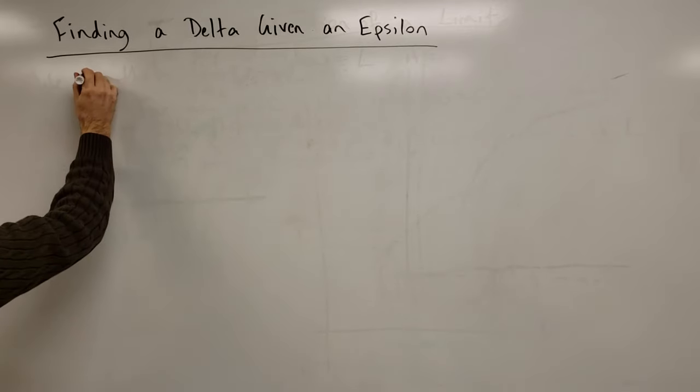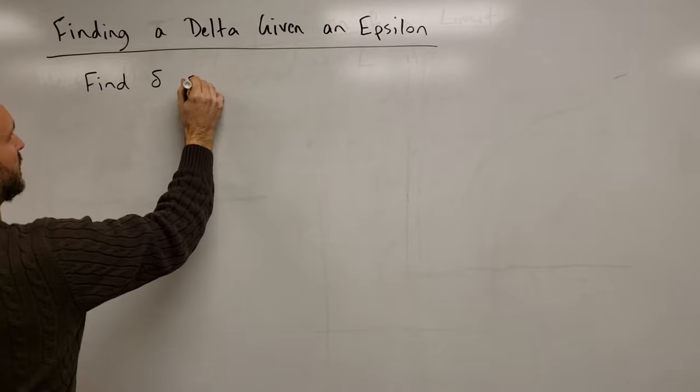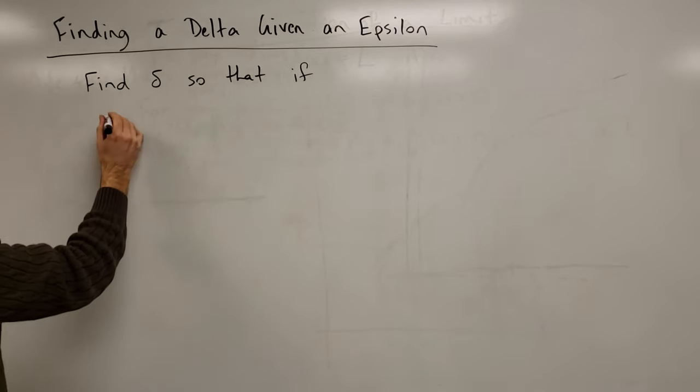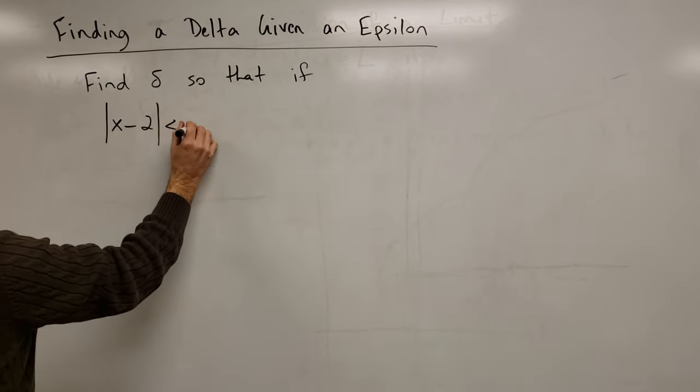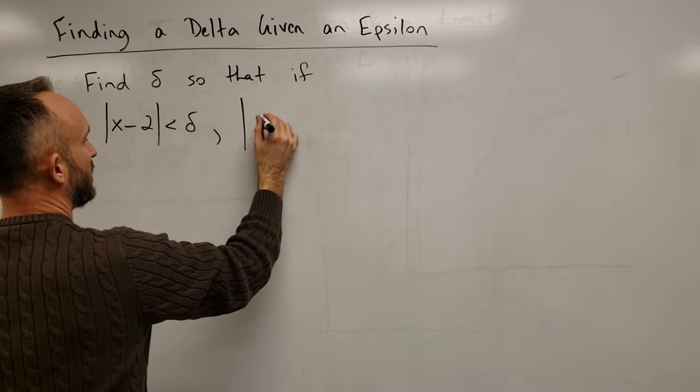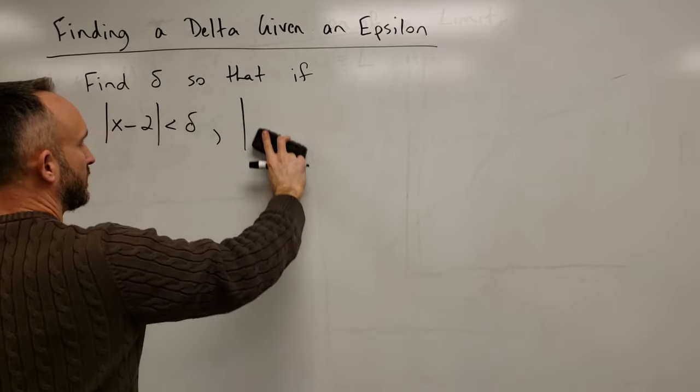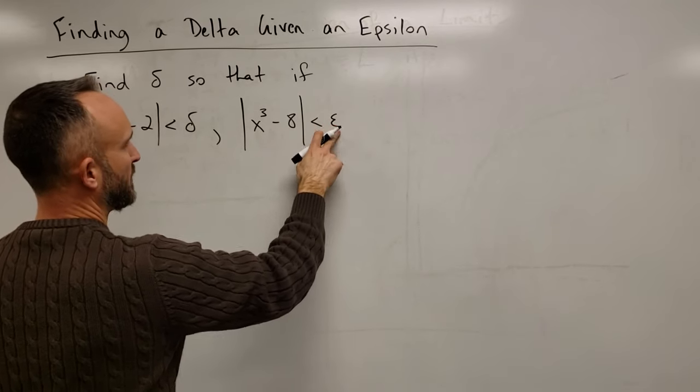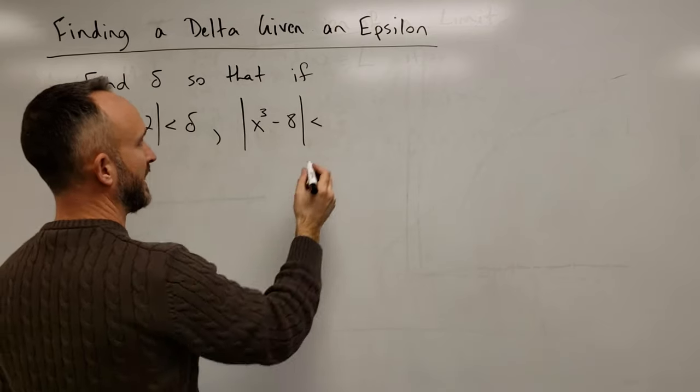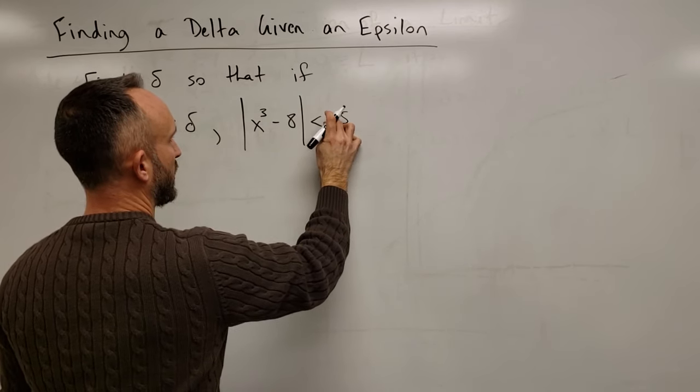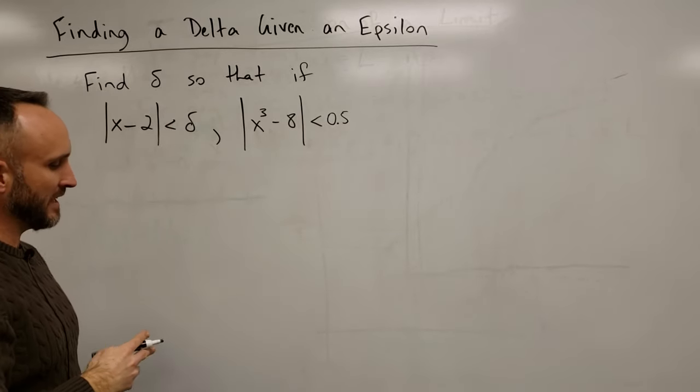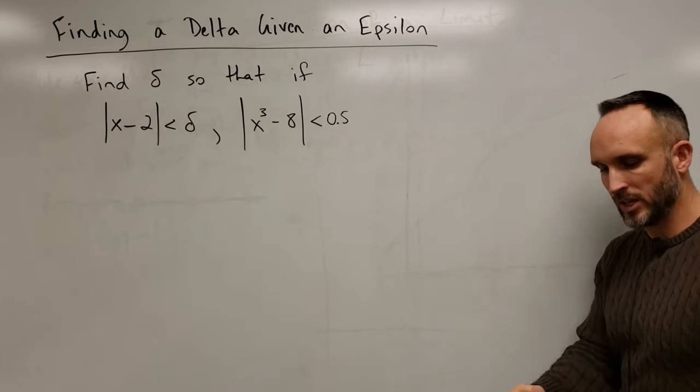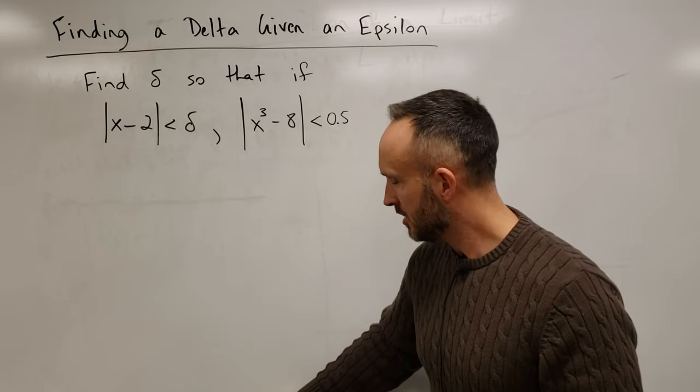So, let's try to find delta so that if the absolute value of x minus 2 is less than that delta, the absolute value of x cubed minus 8 is less than epsilon. And let's pick a particular epsilon. Let's say that epsilon is 0.5. Just because I'm drawing this on a board, bigger numbers are going to be easier for me to draw. So, what do we have here? This time, I'm not giving you a diagram. We're going to have to come up with that ourselves.